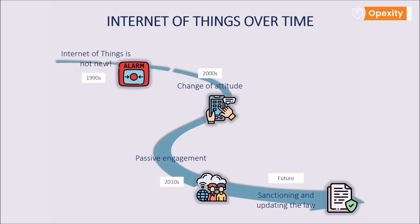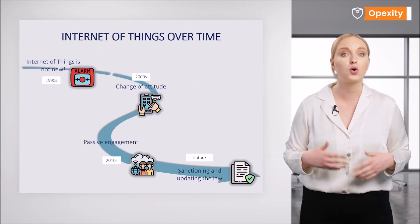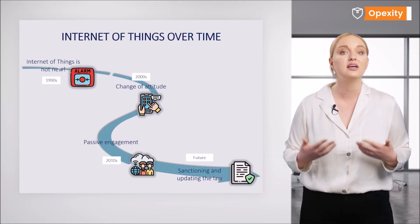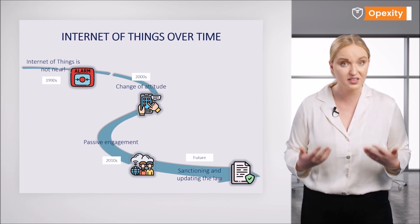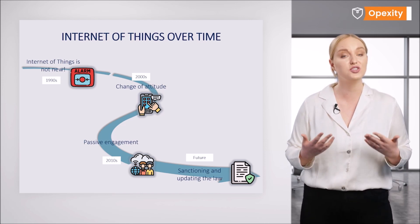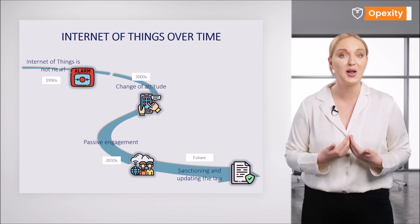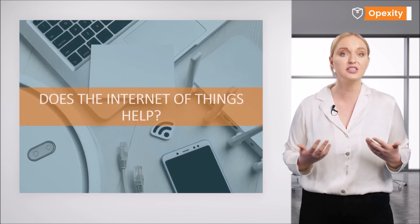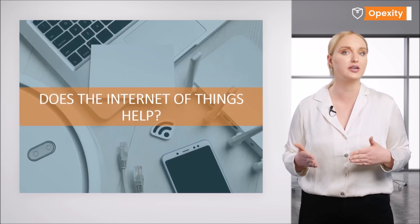The future created in films like Minority Report, Blade Runner, or Gattaca is no longer so distant. And I think we can agree that this is not the future we want. However, let's focus on the good side of the Internet of Things — how can it help us?